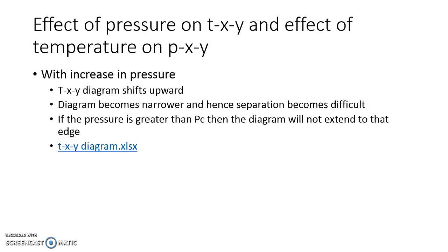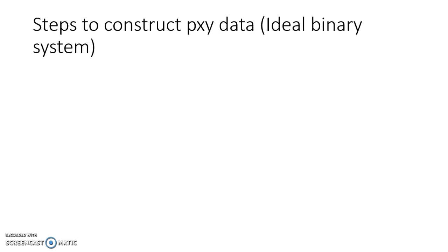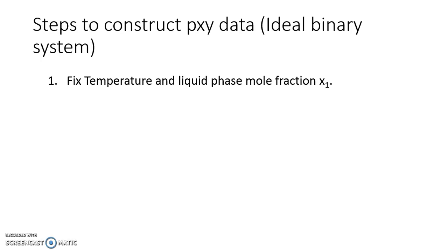Let us see how to construct binary Pxy and Txy diagrams theoretically. As far as degrees of freedom are concerned, we have two degrees of freedom. Out of pressure, temperature, x1, and y1, we can fix any two variables and calculate the other two using Raoult's law. To generate a Pxy diagram, which is always constructed at a fixed temperature, the first thing we do is fix temperature. We are then left with a second degree of freedom, which can be x, y, or P.